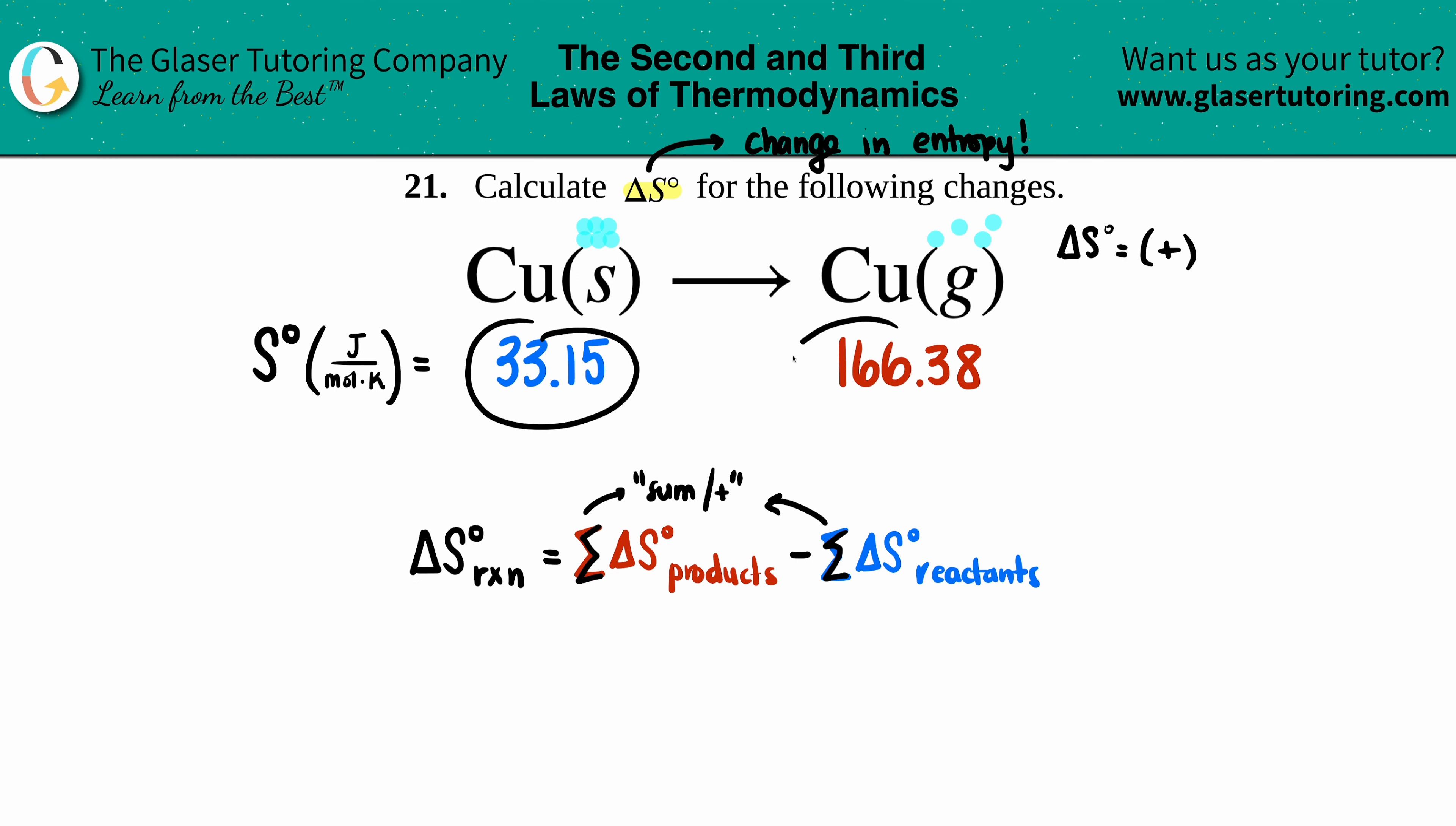Now do we have to change these values or can we keep them? That goes by what the coefficients are in front of the Cu solid and the Cu gas. There is only one of each in the balanced equation, so technically you would take both values and times them by those coefficients. In this case they're both ones, but if there was a two you would times it by two, times it by three, whatever the coefficient is. So this would still be 33.15 and this would be 166.38.